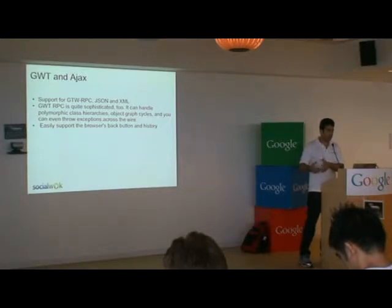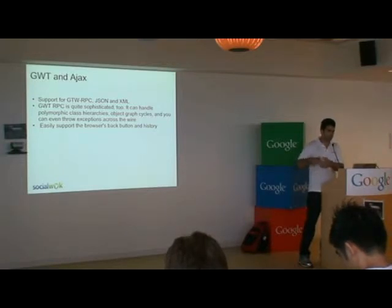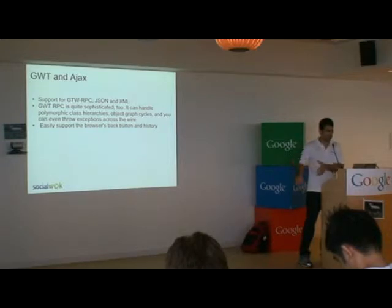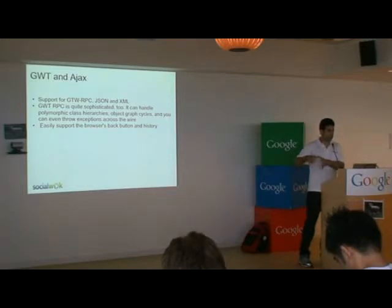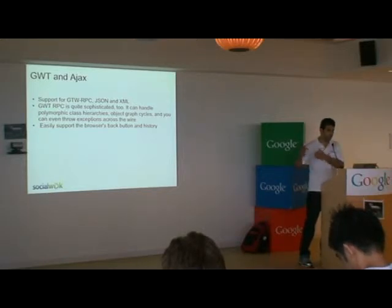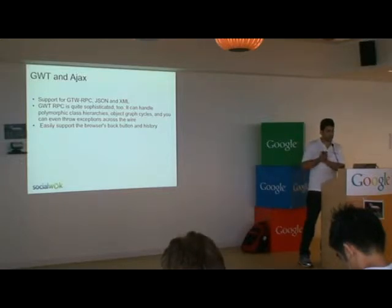You just create an Image Bundle and add resources, which could be different files. You could have one GIF file for the trash can, another file for the smiley icon. When you're using it in your code, you just do ImageBundle dot whatever name you've given the resource. Then when GWT is compiled and loaded, the compiler will actually take all these images, squish them together into one single image file and do all the CSS positioning for you.